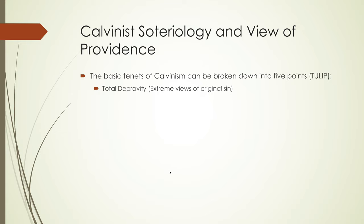Total depravity refers to an extreme version of original sin. According to Calvin, human nature is entirely corrupt as a result of the fall of man and our ejection from paradise. We are full of sin from the time of our birth, and there's really nothing that we can do about that. This doesn't necessarily mean that everything we do is pure evil, but it does refer to the notion that the fall was so serious that it affects the entirety of our person.